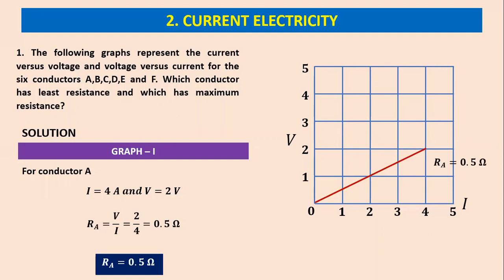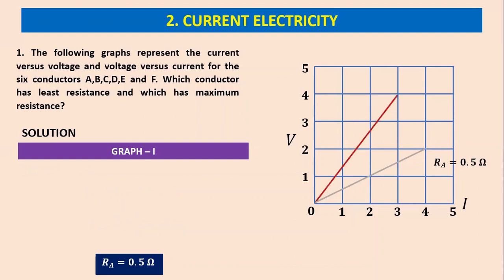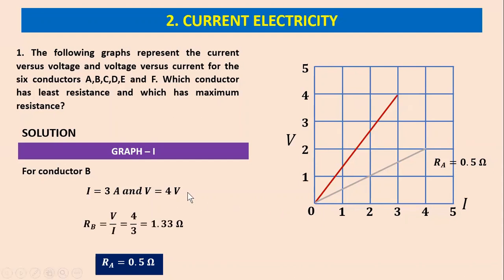Let us now go for the second curve. This line meets a point at coordinate (3, 4) — 3 ampere current and 4 volts. For conductor B, the resistance is given by V by I, which is 4 divided by 3, equal to 1.33 ohms. R_B is greater than R_A, so R_B equals 1.33 ohms.